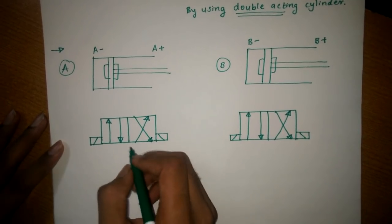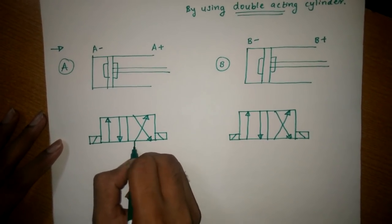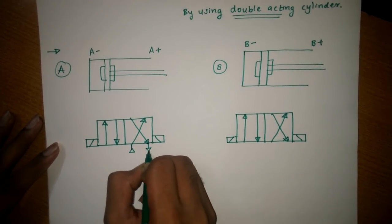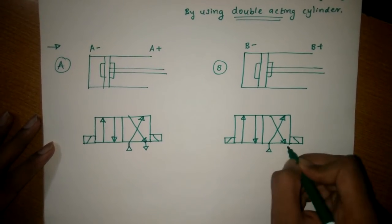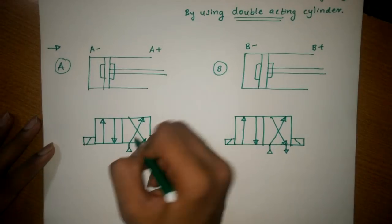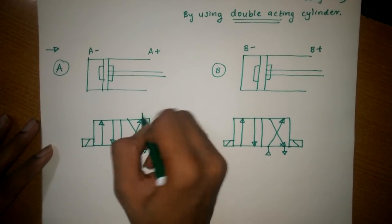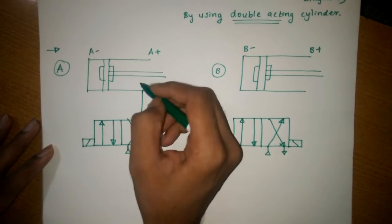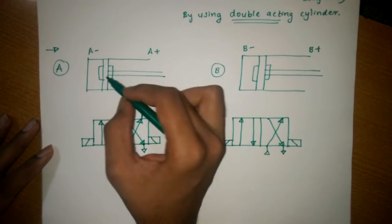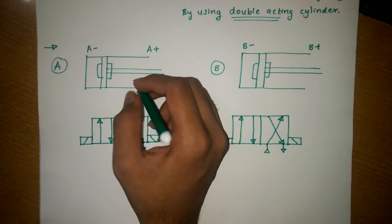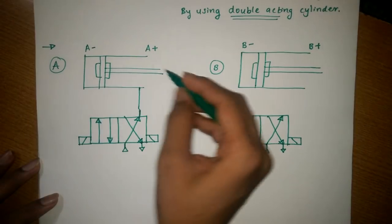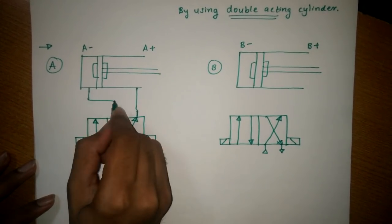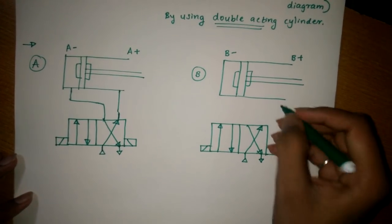While connecting: this is your compressor — compressed air — and this is your exhaust, for both the cylinders. This compressor is connected to this point, meaning the piston will go right to left, and while pushing back it will exhaust, which is connected to this point.